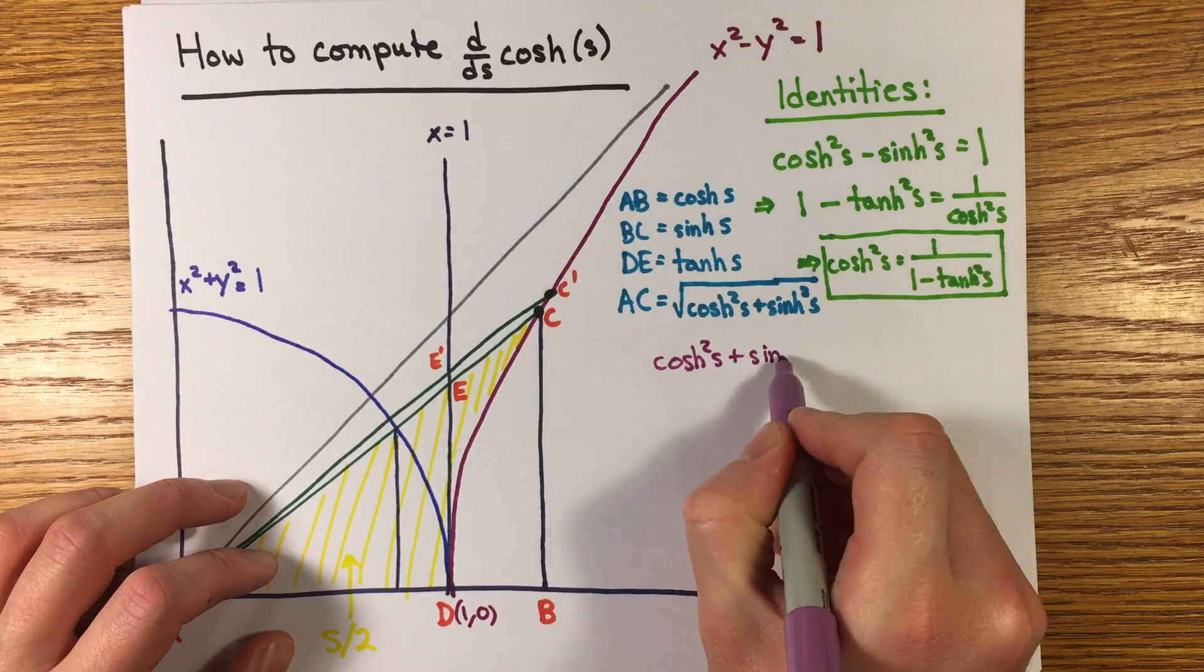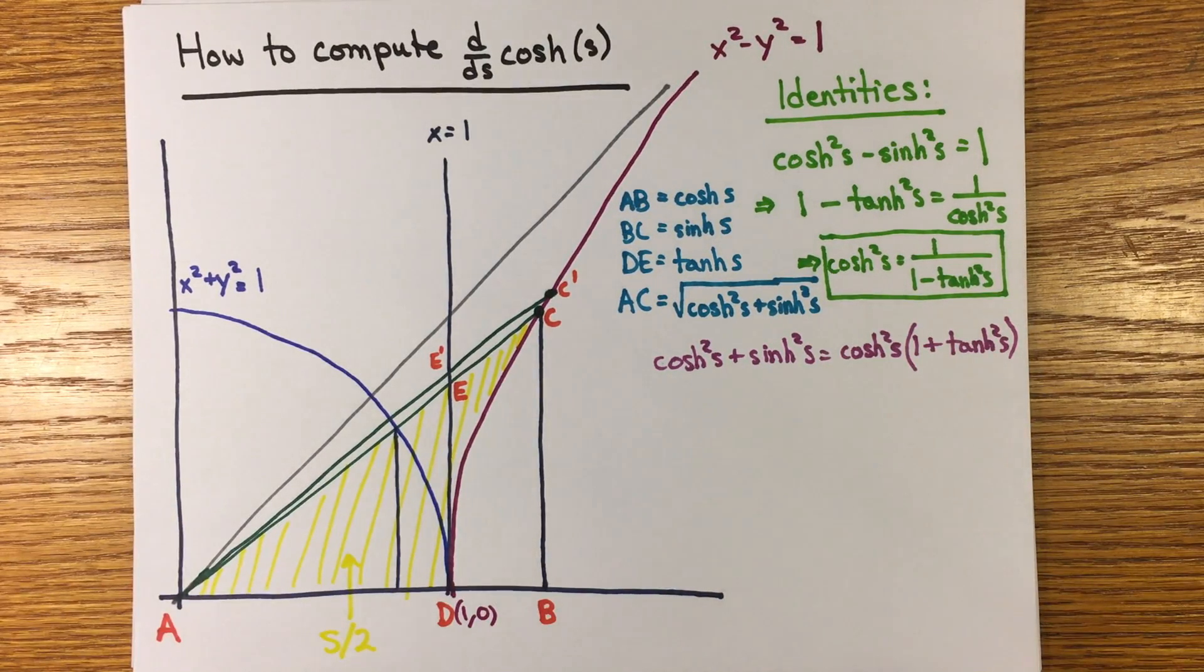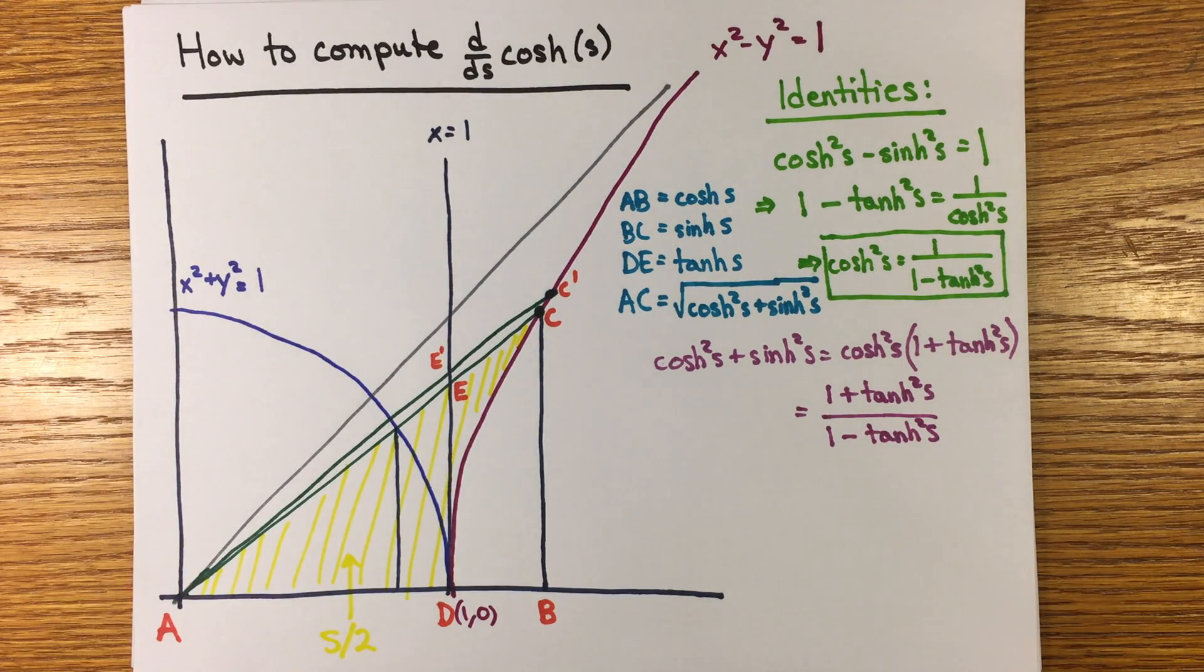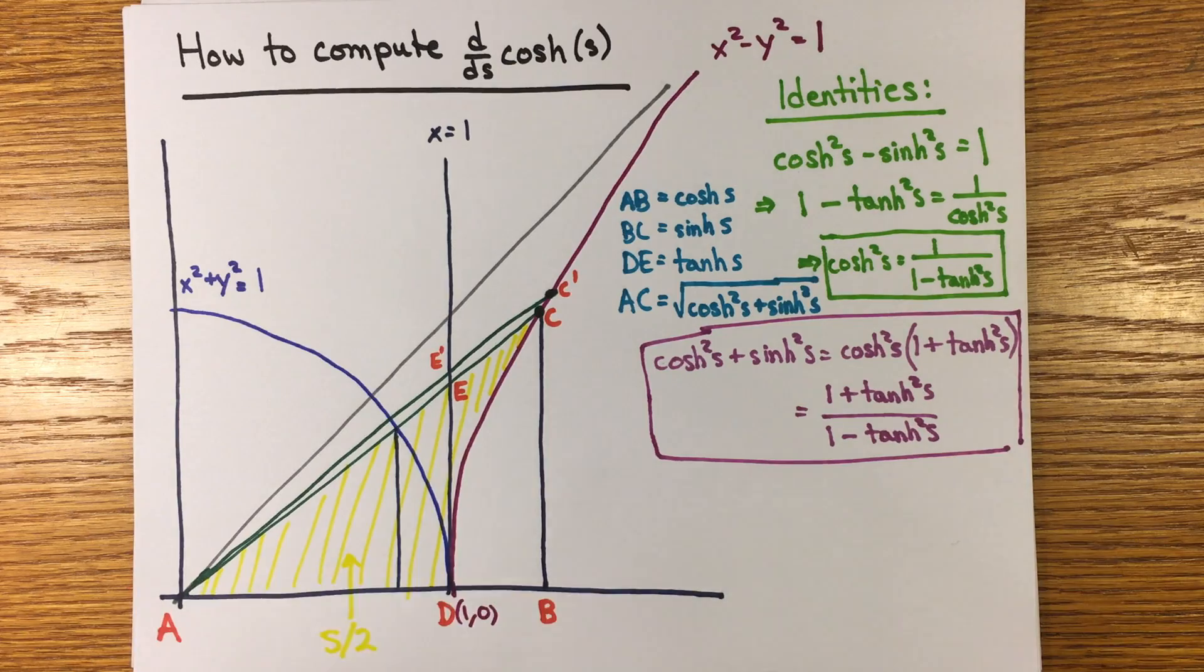Then we can rewrite cosh squared plus sinh squared, which is the length of AC, as cosh squared times one plus tanh squared, which is equal to one plus tanh squared over one minus tanh squared.